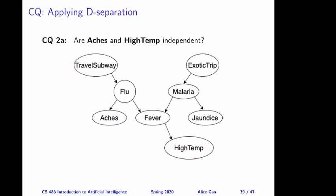Let's keep going. The next question, 2a: we are now looking at a different set of variables — the relationship between x and high temperature. In this question we observe nothing. So are x and high temperature independent from each other if we observe nothing? Think about this yourself and then keep watching for the answer. The correct answer is no — these two variables are not independent.